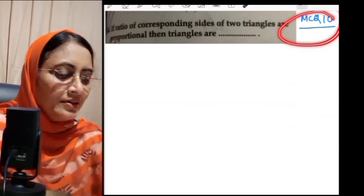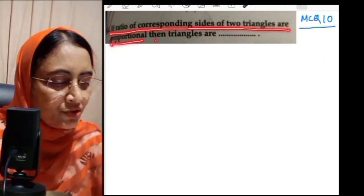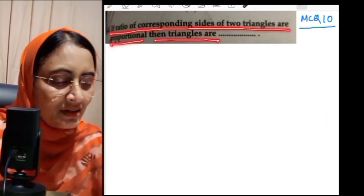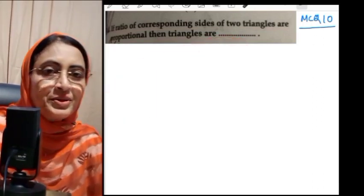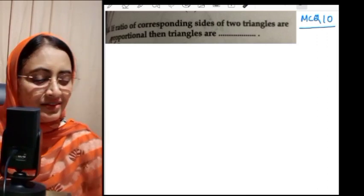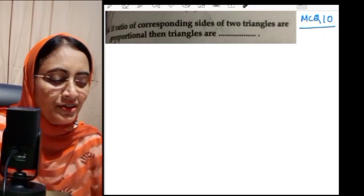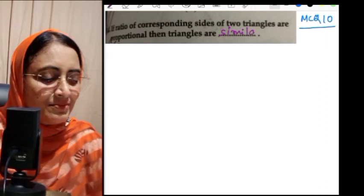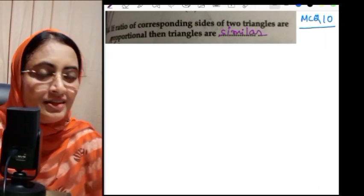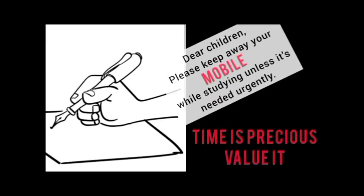MCQ number 10, the last one: if the ratio of corresponding sides of two triangles are proportional, then the triangles are similar. This is the easiest one — corresponding sides proportional means the triangles are similar. Thank you all for watching, that is all for today. See you in my next video. Till then, take care and keep practicing.